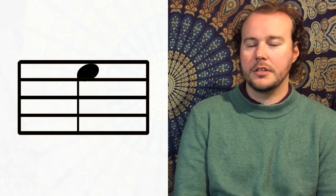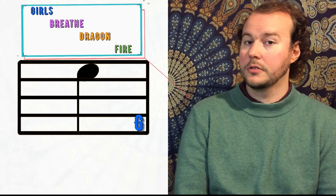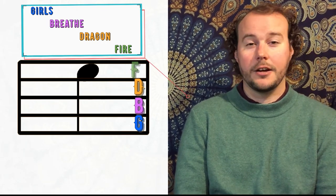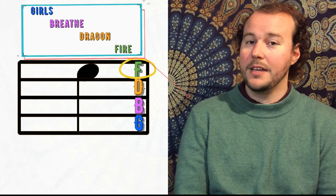So let's try one more. So what do we say again, or our very first question is, is it a line or a space? That's the very first question you want to ask yourself. So now it's a space, right? So we start, what do we say for spaces? Girls, breathe, dragon, fire. So that top space is an F.